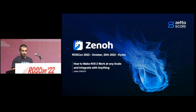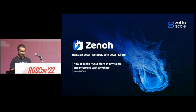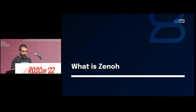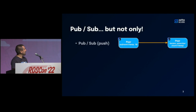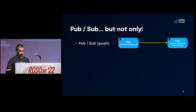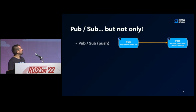Hello everyone. I'm Julien Hock from Zetascale Technology, and I'm working on the open-source project named Eclipse Xeno. Let me give you a quick introduction on what Xeno is. Xeno is a communication middleware, similar to DDS, MQTT, 0MQ, or a lot of other middlewares, but it has some specific features that make it very unique.